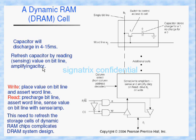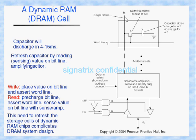Now we'll see how the read and write operations happen. For a write operation: place a value on the bit line and assert the word line. BI stands for bit line and WI stands for word line. The bit we want to write into the memory cell will be placed on the bit line.